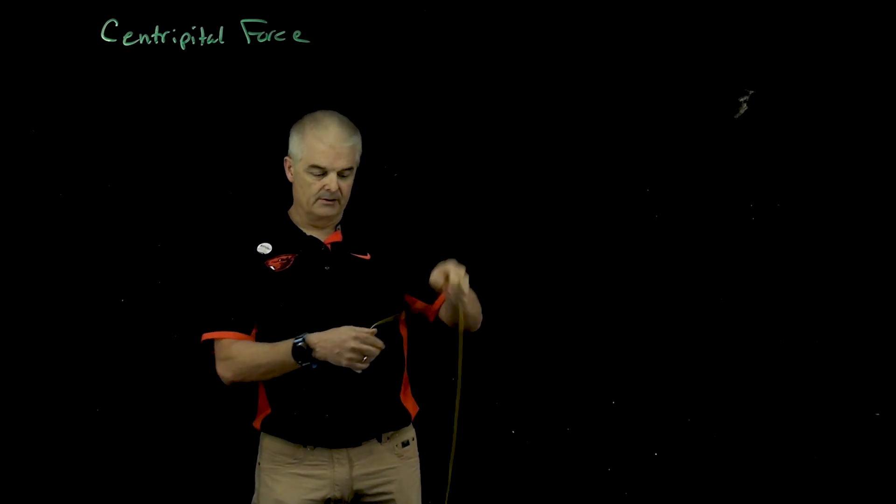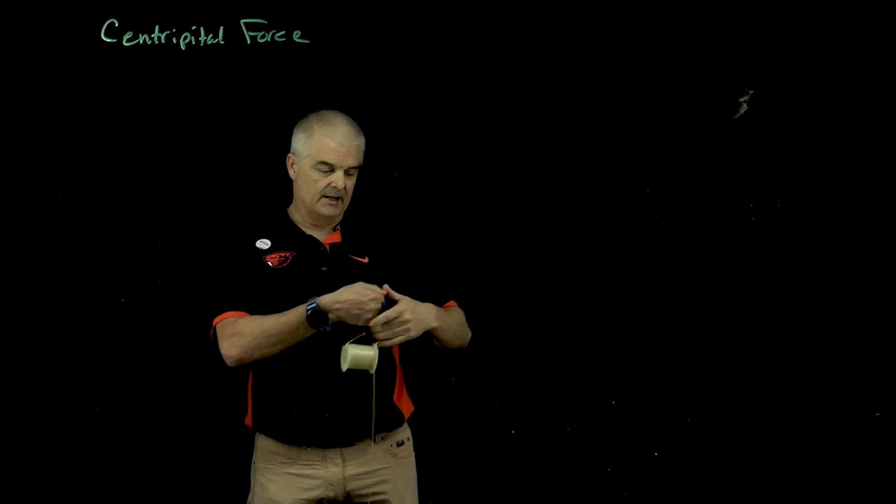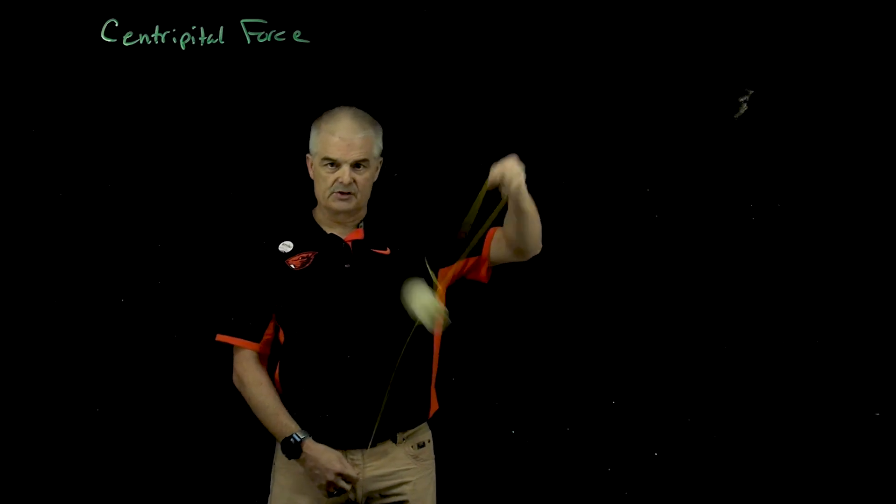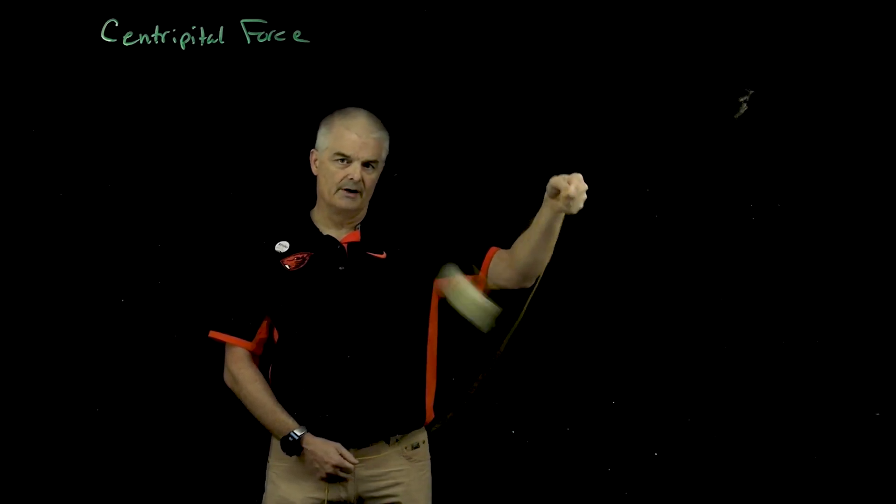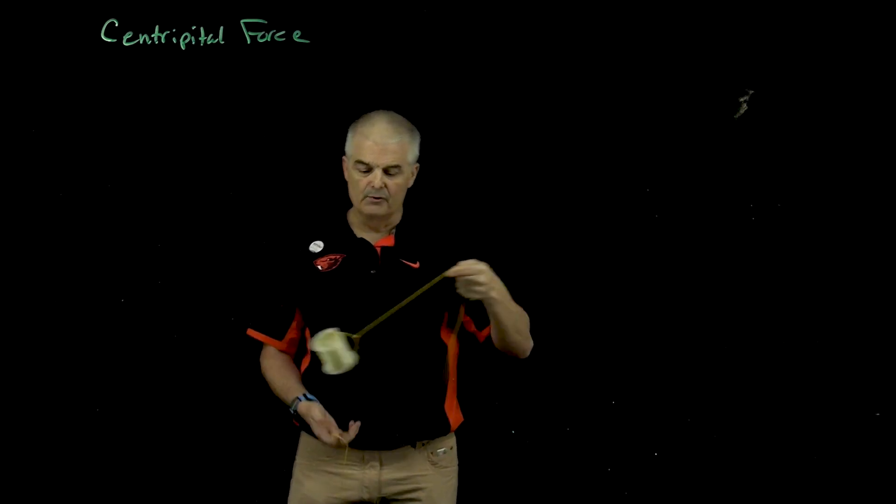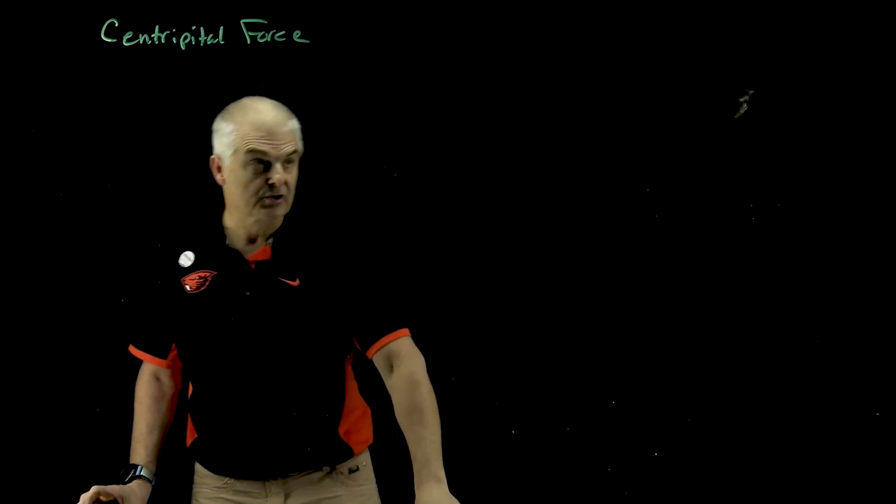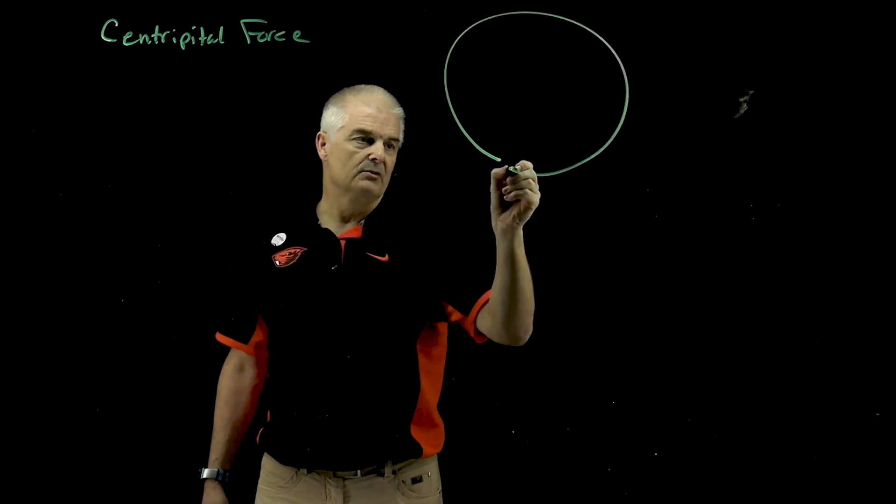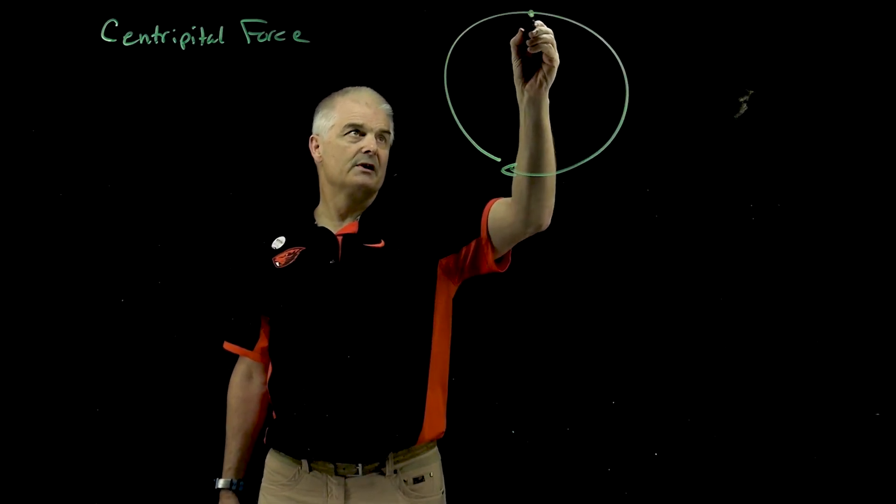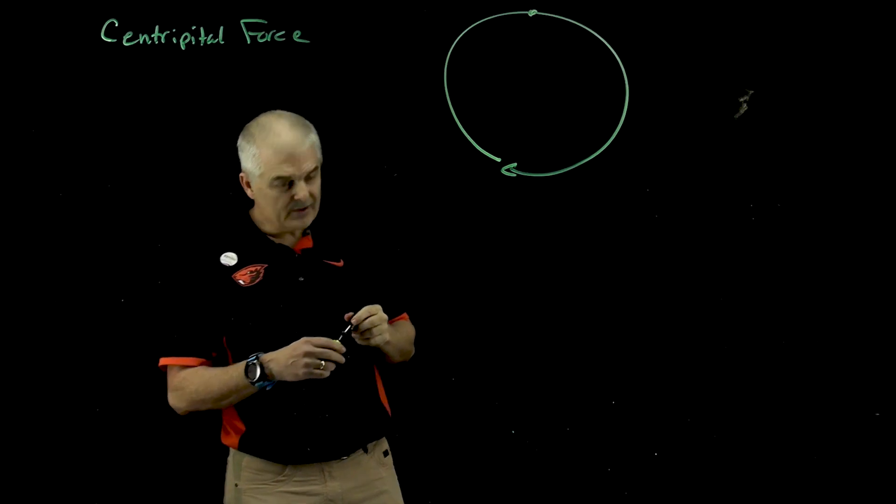I've got right here an object attached to a string, and I'm going to spin it. So as I spin it, there are forces going on as it spins around and around and around, moving in a circular motion. And so if you are drawing this, we've got a circle. And if it's at this very top at the peak, what's going on?